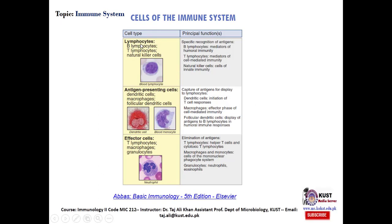The cells of the immune system include B lymphocytes, T lymphocytes, and natural killer cells. B lymphocytes are mediators of humoral immunity, T lymphocytes are mediators of cell-mediated immunity, and natural killer cells belong to innate immunity. Antigen-presenting cells such as dendritic cells and macrophages capture and display antigens to lymphocytes. Dendritic cells initiate T cell responses, while macrophages function in the effector phase of cell-mediated immunity. Effector cells — including helper T cells, cytotoxic T cells, macrophages, monocytes, neutrophils, and eosinophils — are all involved in immune system function.